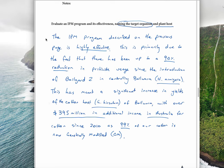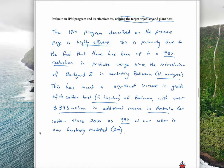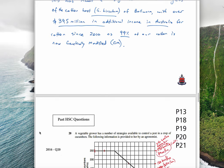This is what it says. The IPM program described on the previous page is highly effective. This is primarily due to the fact that there has been up to a 90% reduction in pesticide usage since the introduction of Bollguard 2 in controlling bollworm or H. armigera. This has meant a significant increase in yields of the cotton host, Gossypium hirsutum, with over $395 million in additional income in Australia for cotton since 2010, as 99% of our cotton is now genetically modified. So that's an excellent answer.